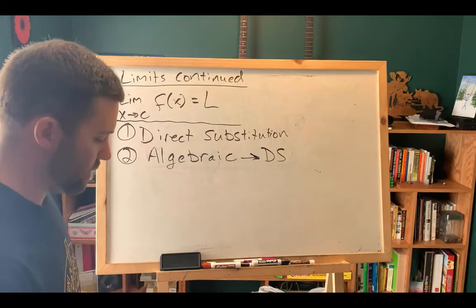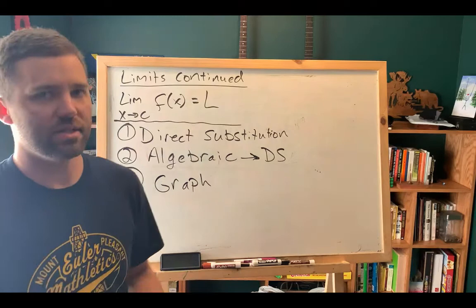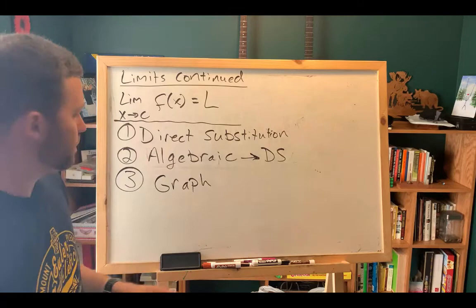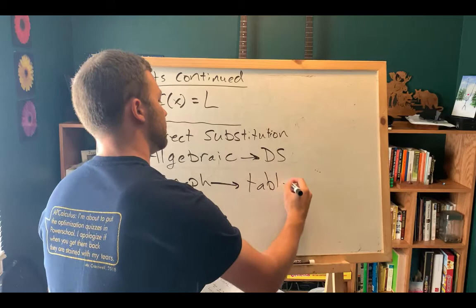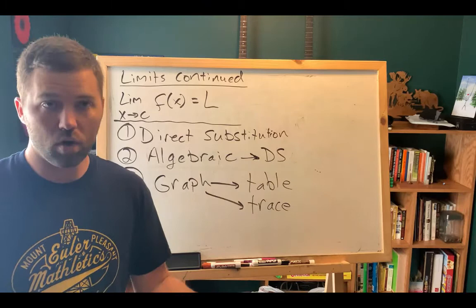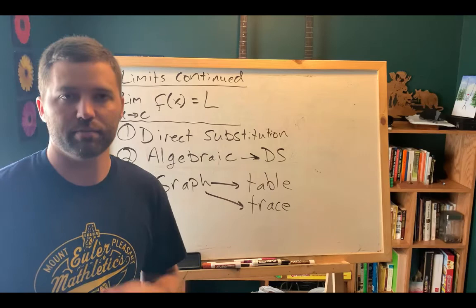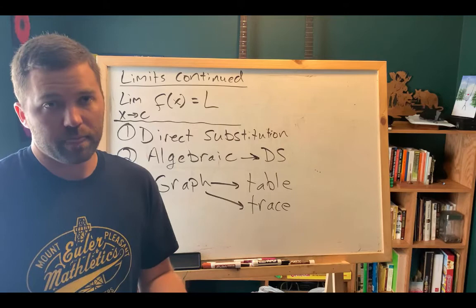And if neither of those work, then you can go ahead and graph the function. When you are evaluating limits using the graph, sometimes I see students rely too heavily on the graph. The table is really going to be your friend. So when you're graphing, there's two things that you can leverage: use a table and you can also use the trace feature. The table is a great method. You can plug in X values like 0.9, 0.99, 0.999 and see what the Y values are doing as you get closer to one. Because if you've gotten to this point, that's because direct substitution didn't work.